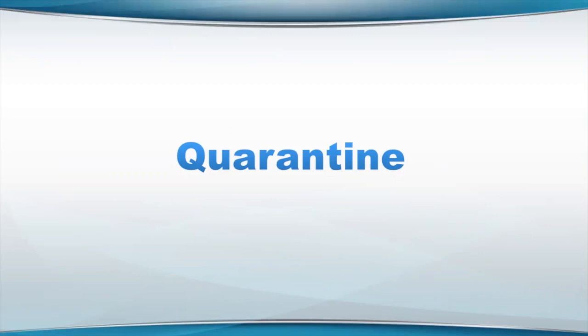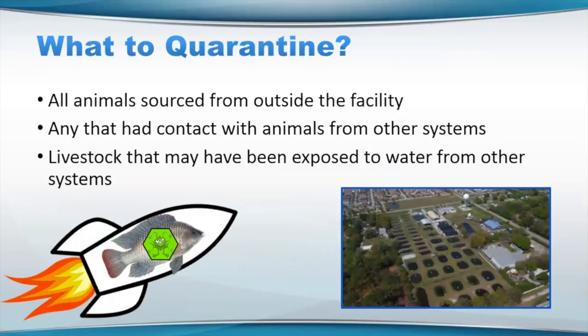Quarantine. A lot of folks know what quarantine kind of means and may or may not try to do it. It really depends on your facility and your animals, but what should you quarantine? Animals coming from outside the facility is probably a really good idea. Any animals that have come from outside the facility, or inside the facility in contact with other animals or systems that you may be moving to new systems — something you want to keep an eye on. Livestock that have been exposed to water from other systems, also coming from outside the facility. Bottom line, if there's a potential that an organism or animal you're raising has been in contact with water or other animals not associated with your facility, that may be a reason to quarantine.